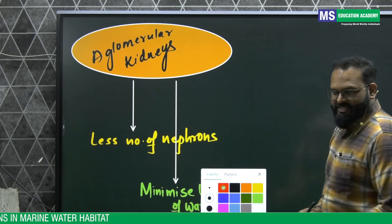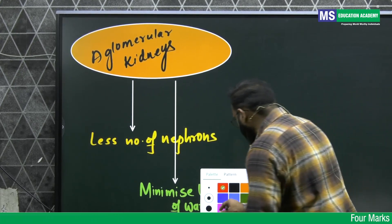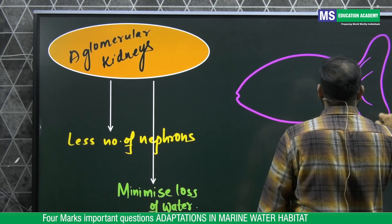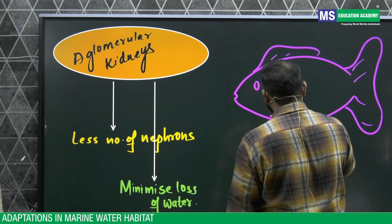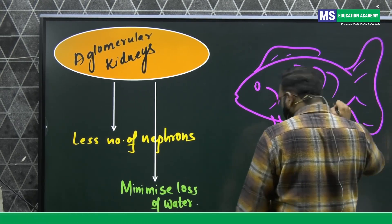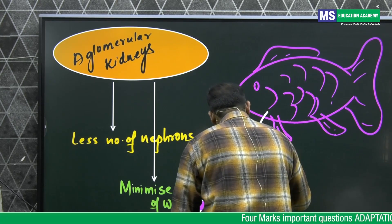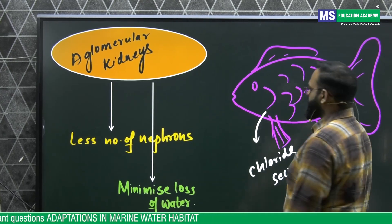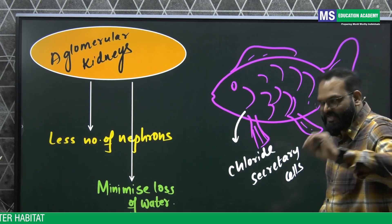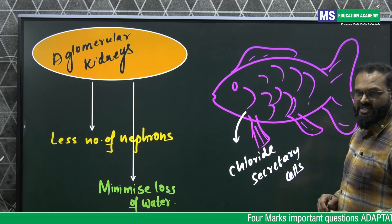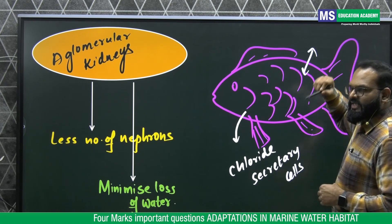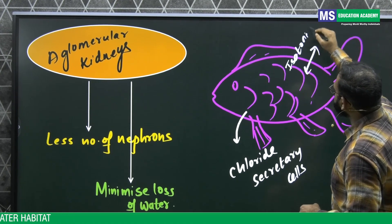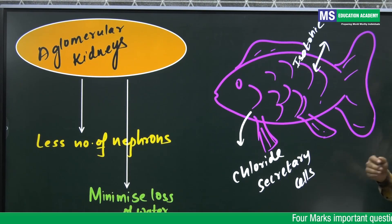To compensate the salt concentration through osmoregulation, these fishes have chloride secretory cells near their gills. All the time, these fishes are putting efforts to maintain an isotonic balance between the seawater and within the body — this is how they maintain osmoregulation and survive.